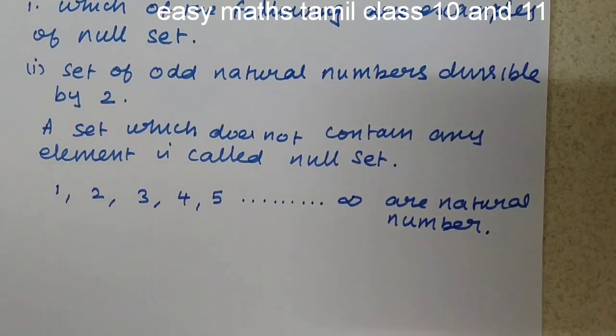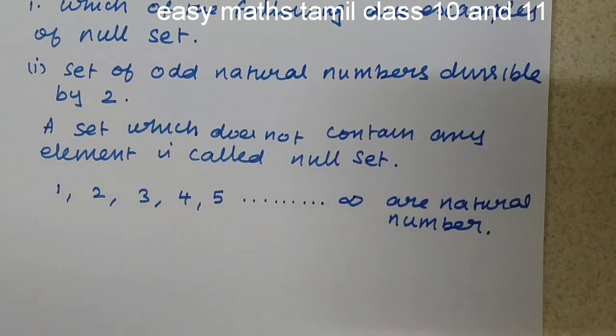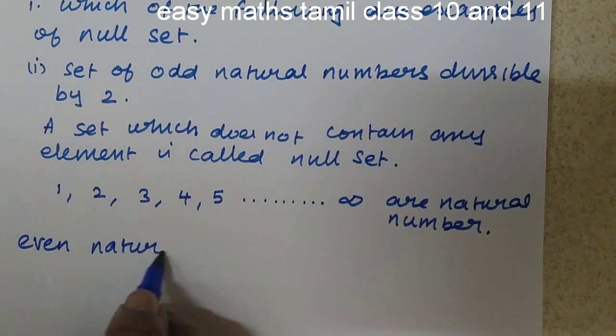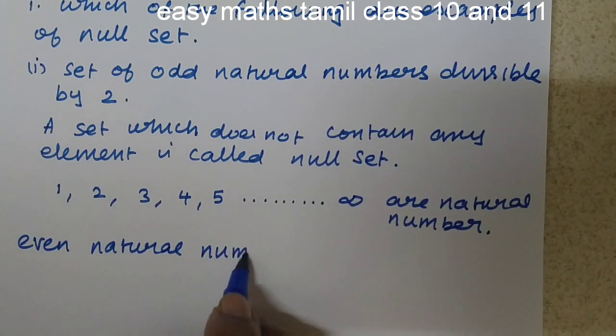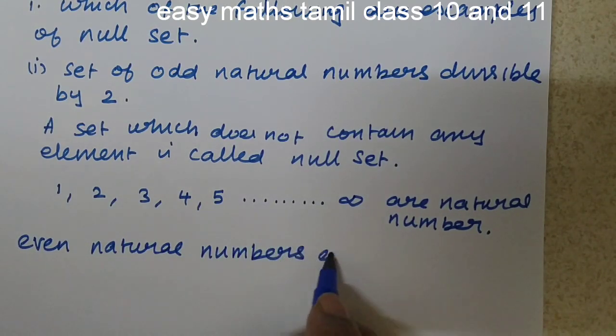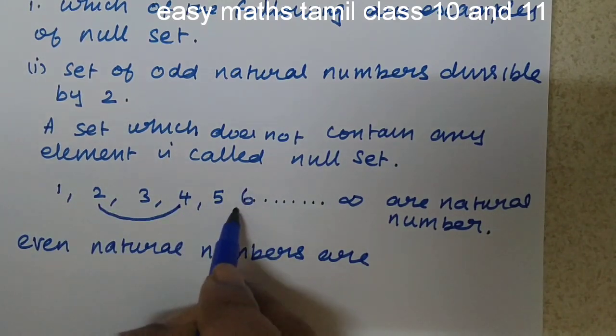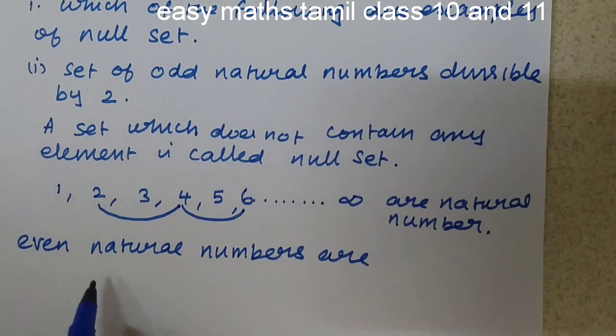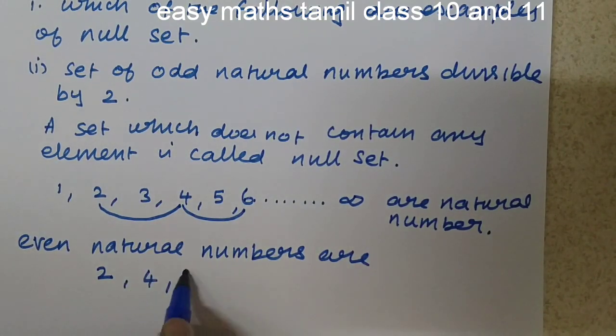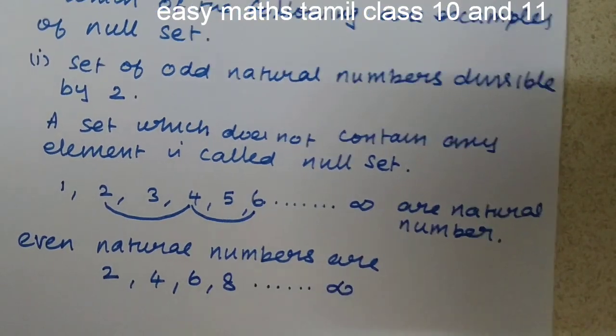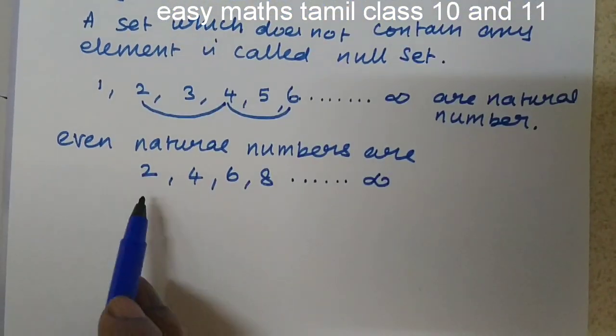Then what is odd natural number and what is even natural number? Even natural numbers are 2, 4, 6, 8. These are even natural numbers.